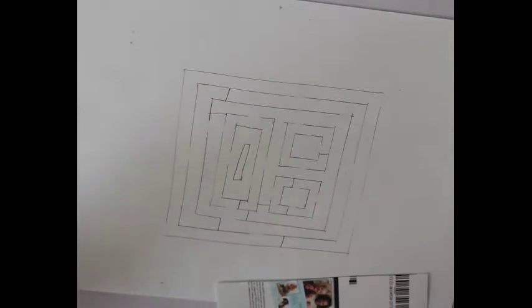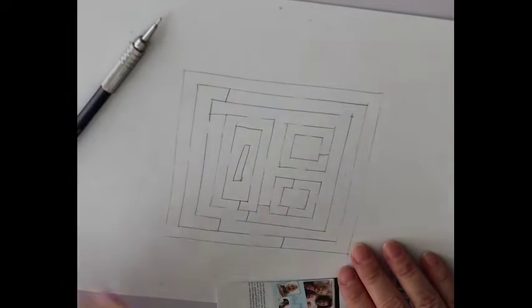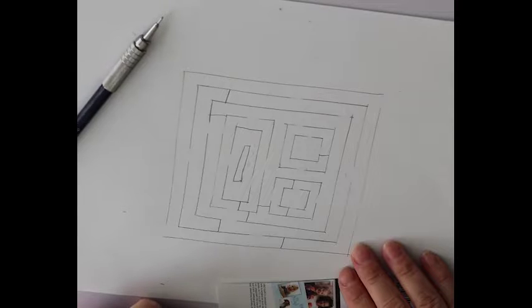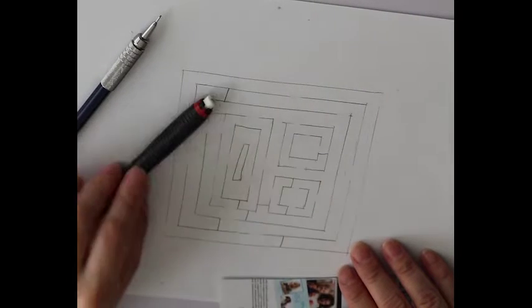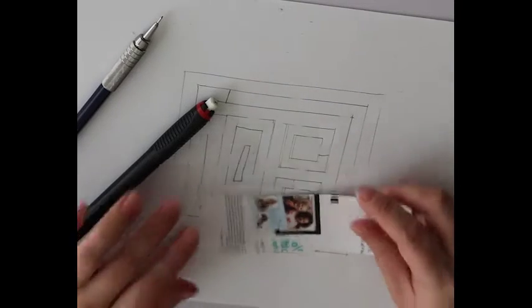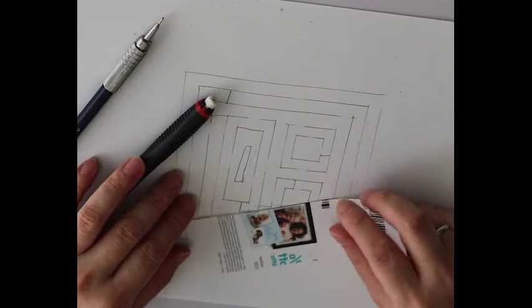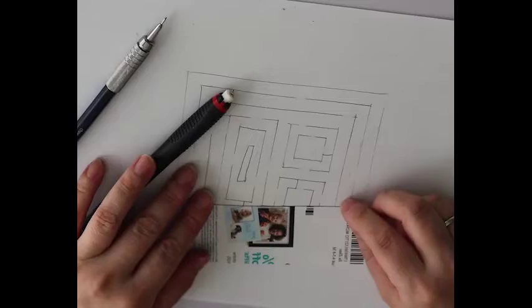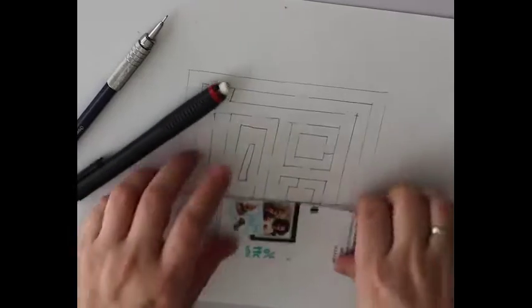So what you need is a pencil. You don't have to use a mechanical pencil. You can just use a pencil. Eraser. And a ruler. Since Miss Zhao doesn't have a ruler in her house, she is just going to use anything that has a straight edge.